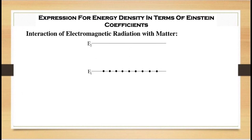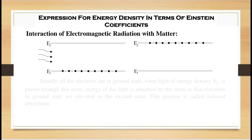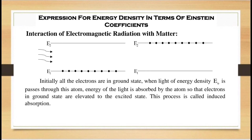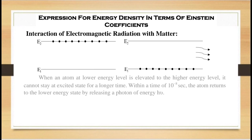Here E1 is the ground state and E2 is the excited state. Initially all the electrons are in the ground state. When light of energy density E_μ passes through this atom, the energy of the light is absorbed by the atom so that electrons in the ground state are elevated to the excited state. This process is called induced absorption.